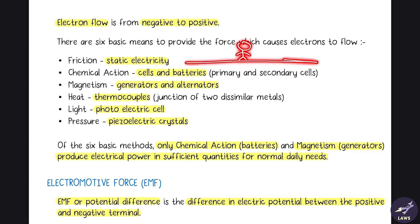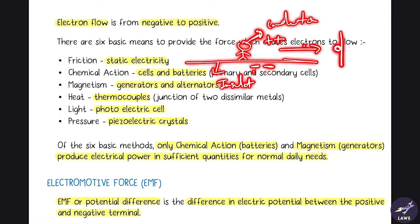A rug is an insulator and our body is a conductor. When you walk over the rug, free electrons from your body are absorbed by the rug — the rug becomes more negatively charged and your body becomes positively charged. When you then touch a metallic door knob, which is neutral, electrons flow from the door knob to your body, giving you a small electric shock. This is an example of static electricity.